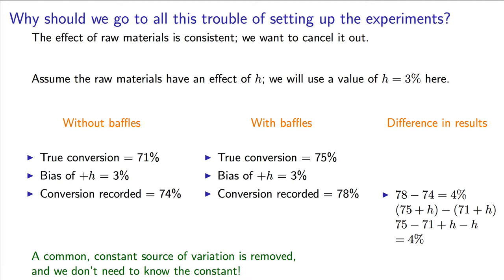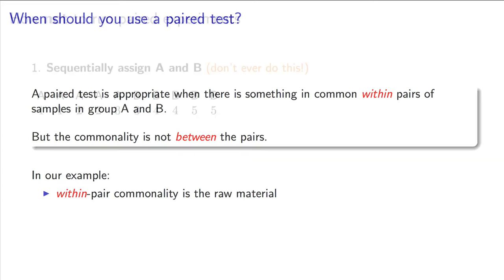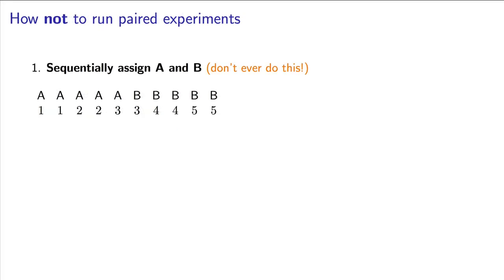In fact, a paired test must be designed or planned ahead of time. We always know when to use a paired analysis. Pairing is used when there is something in common within the pairs that could affect the outcome. There is no commonality between the pairs. In this example, the common element within the pairs is the raw material. The raw material is not common between the pairs. Every time we run a new pair, we have a new set of raw material. So let's go take a look at how you run these experiments.